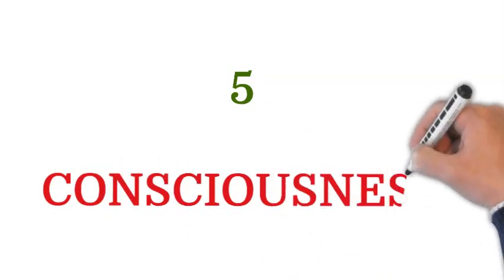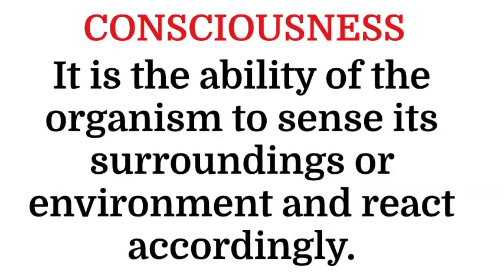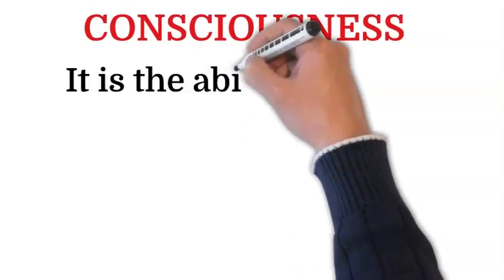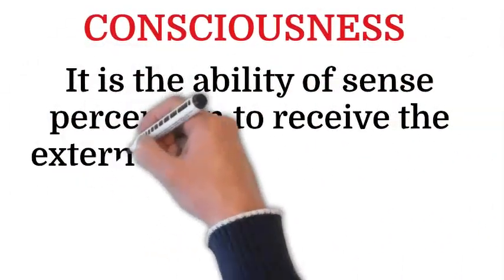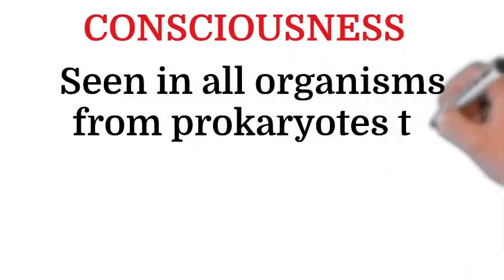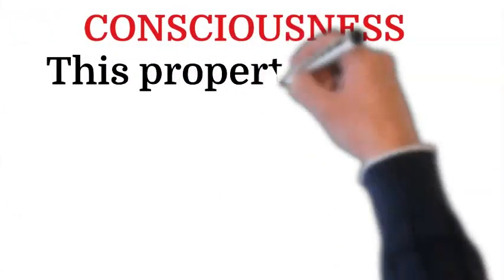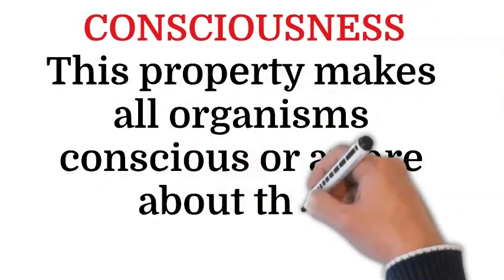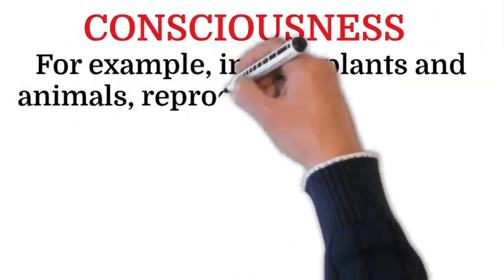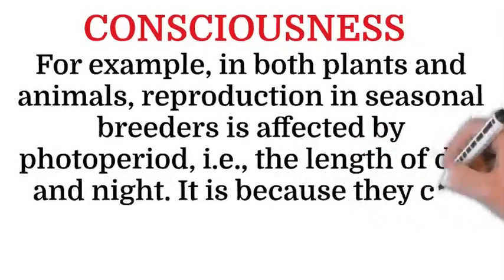The fifth characteristic is consciousness. It is the ability of the organism to sense its surroundings or environment and react accordingly. In other words, it is the ability of sense perception to receive external stimuli — which can be physical, chemical, or biological — and react to them. It is seen in all organisms from prokaryotes to eukaryotes, and unicellular to multicellular organisms. This property makes all organisms conscious or aware of their surroundings. For example, in both plants and animals, reproduction in seasonal breeders is affected by photoperiod — the length of day and night — because they can sense changes in the surroundings.